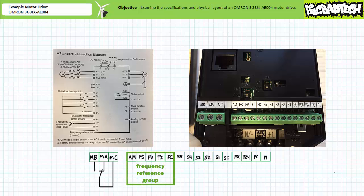Left to right, the terminals go AM, FS, FV, FI, and FC in the frequency reference group; S5 through S1 and SC in the multi-function digital input group; and PC and P1 in the multi-function digital output group. The remaining two terminals consist of an internal 24-volt DC power supply connection P24, as well as an input power supply connection PSC.